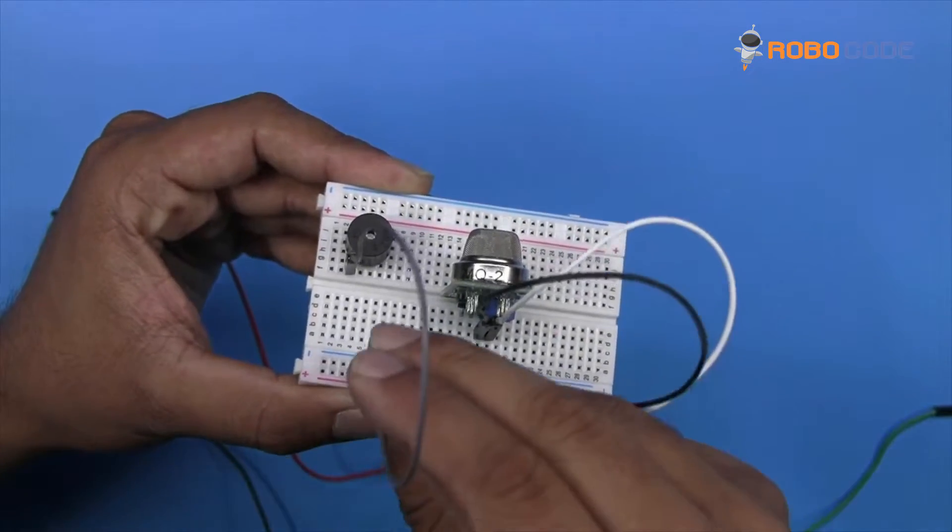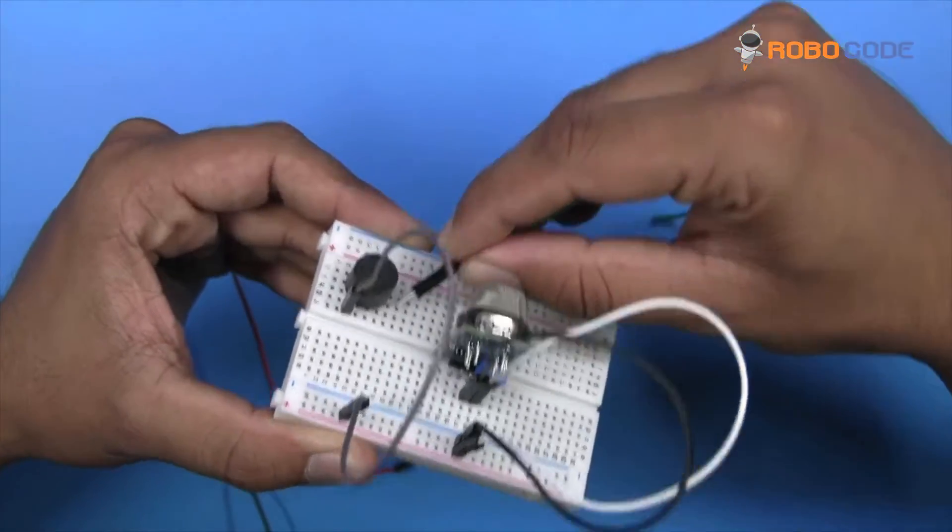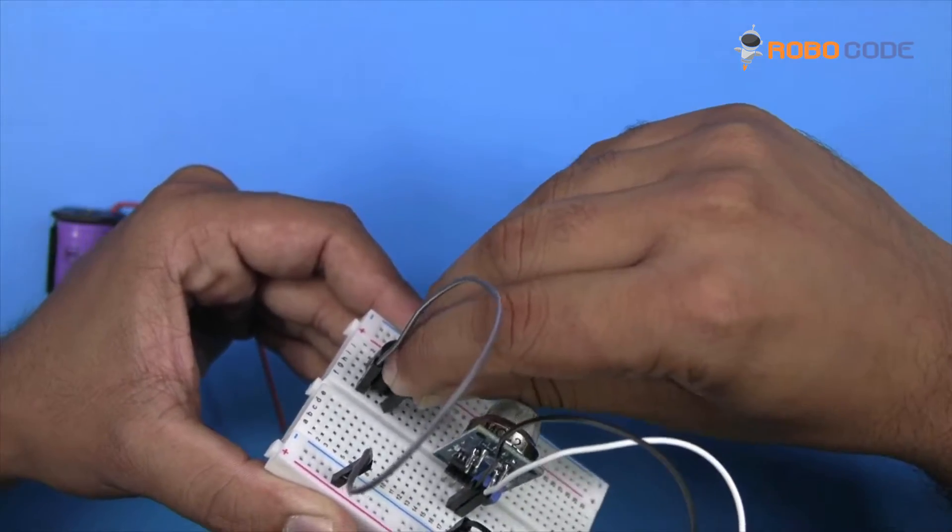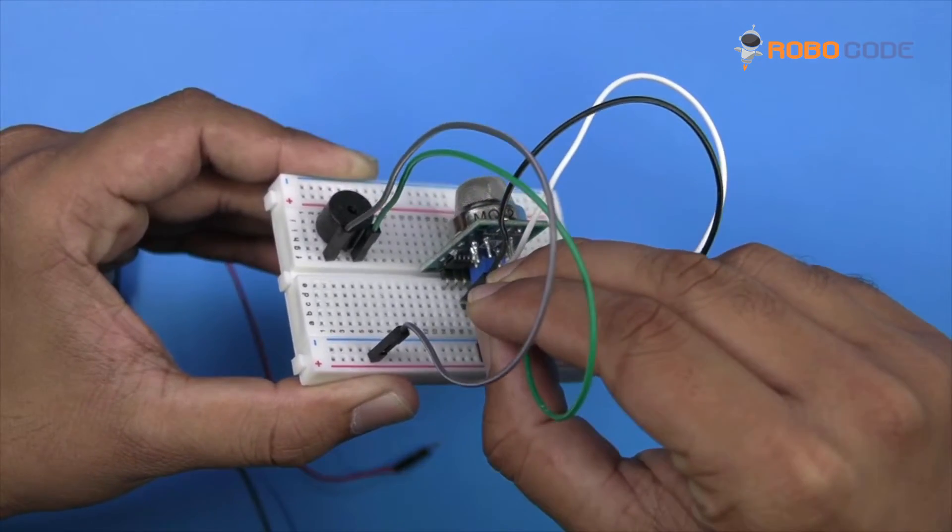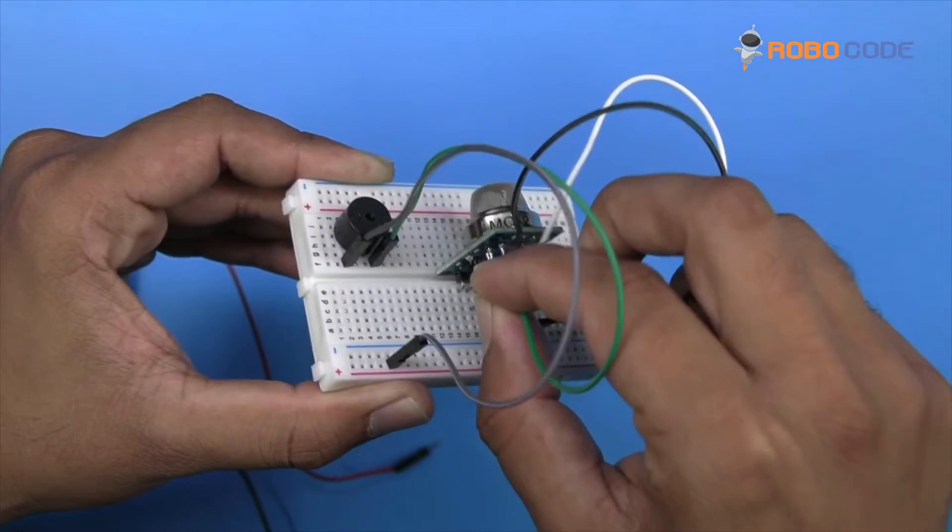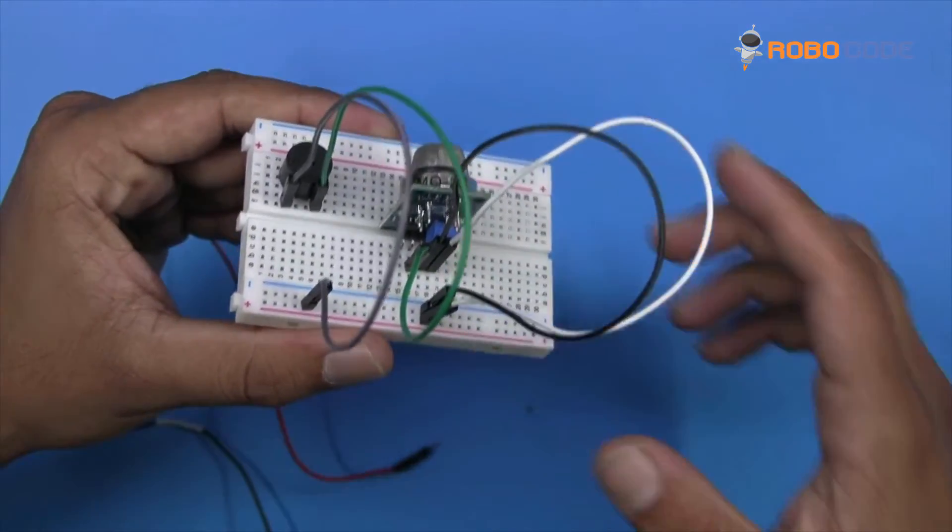Insert the other side of the gray wire on the last row of the breadboard. Now take the green wire and insert it at the other pin of the buzzer. Insert the other side of the green wire right next to the black wire.